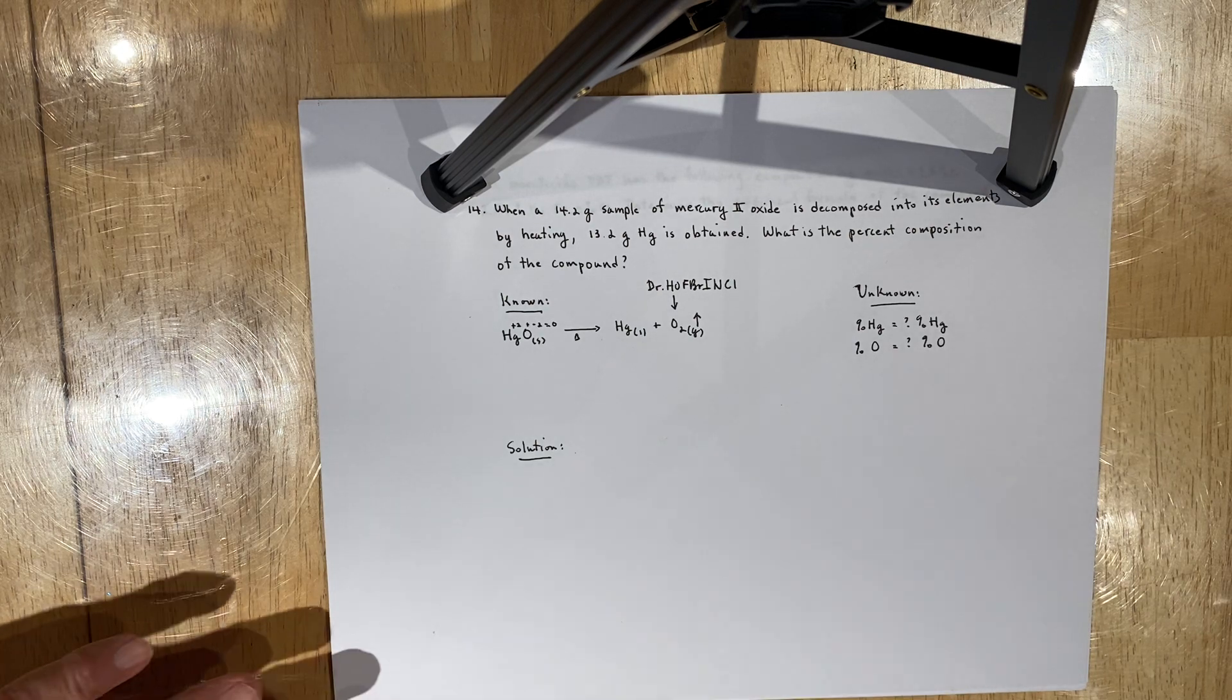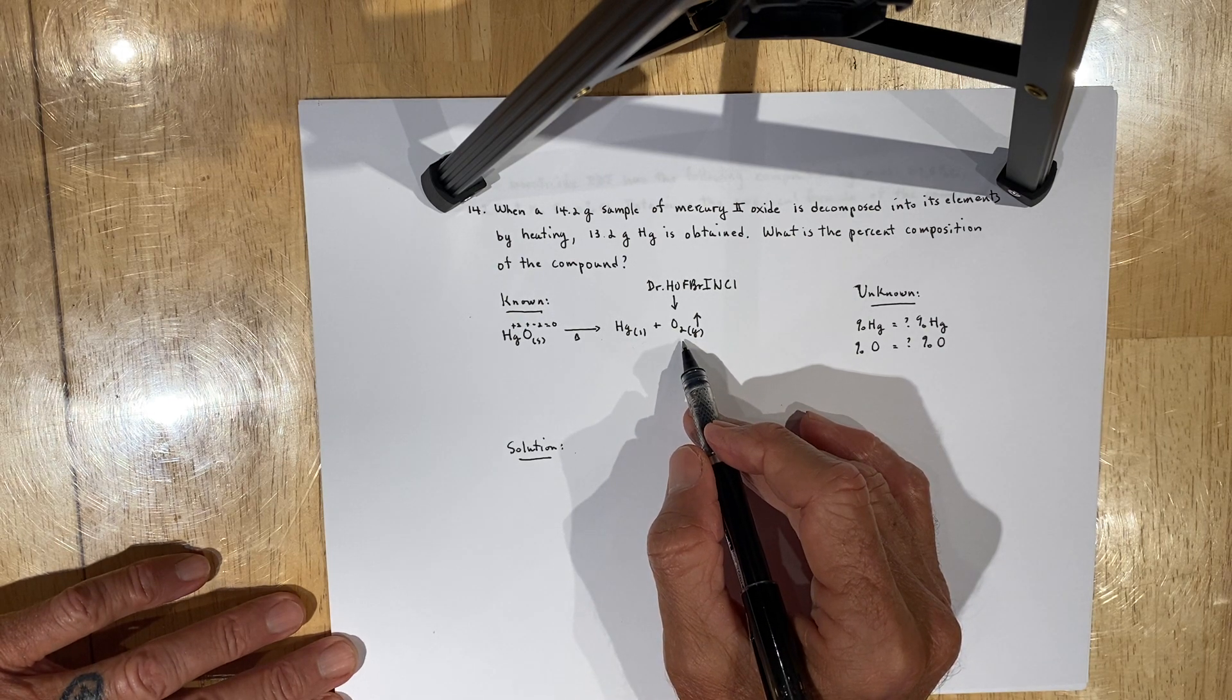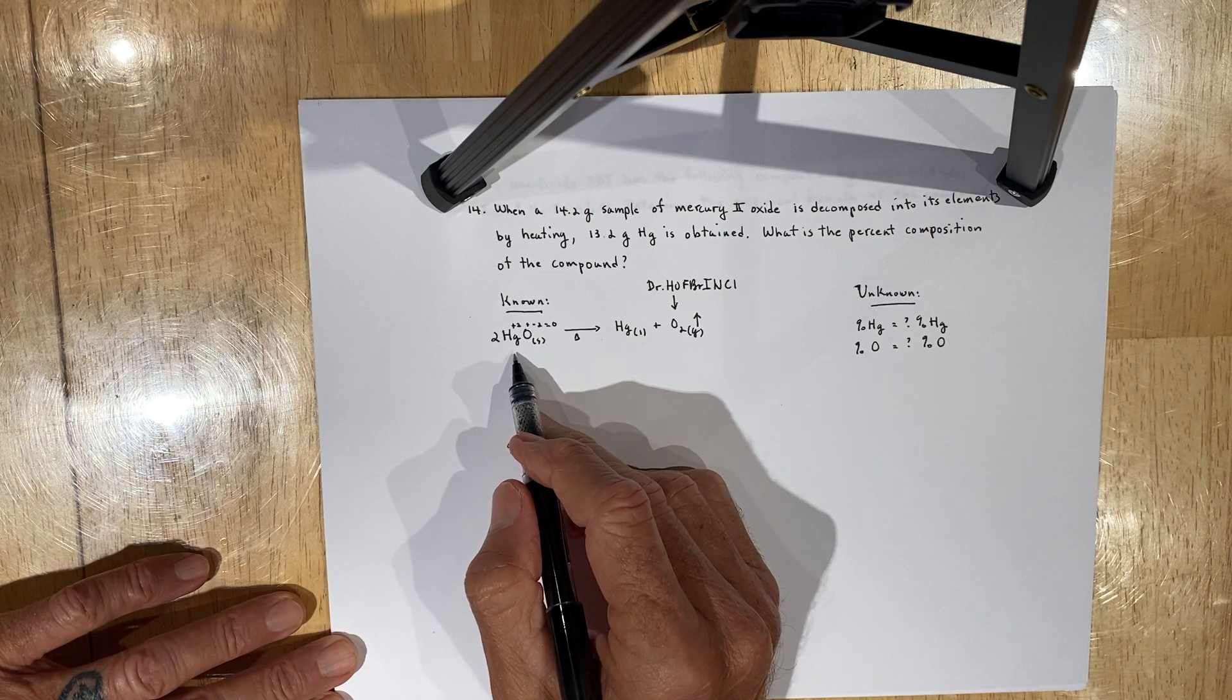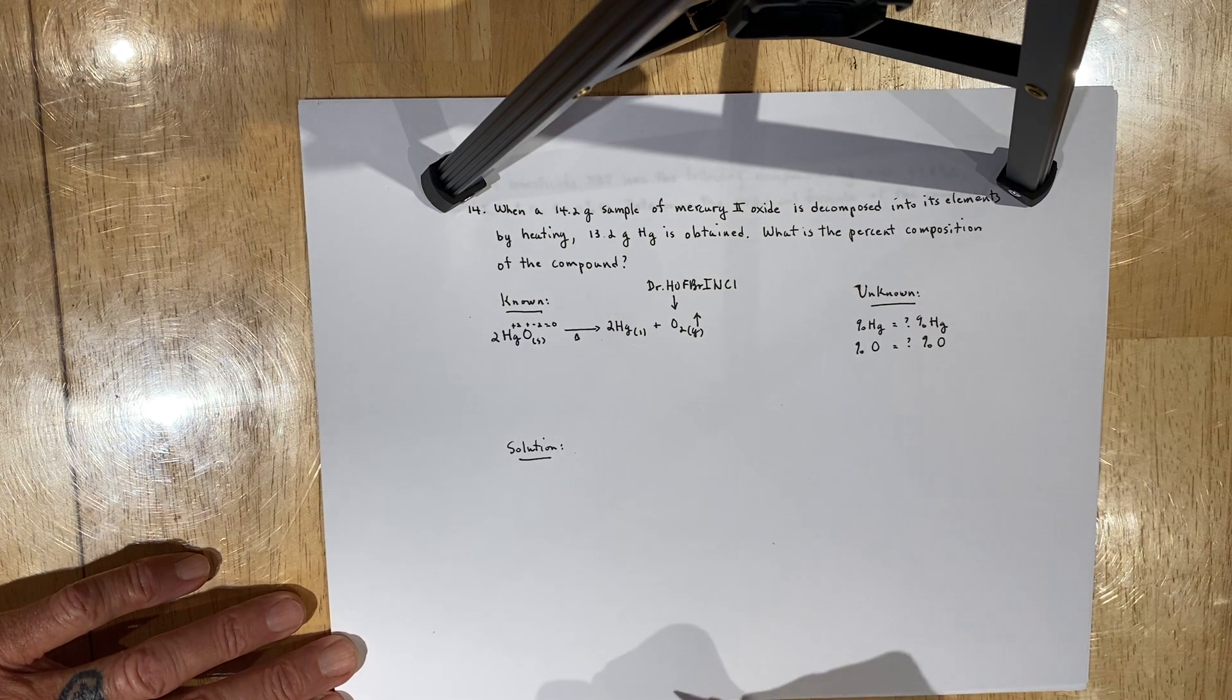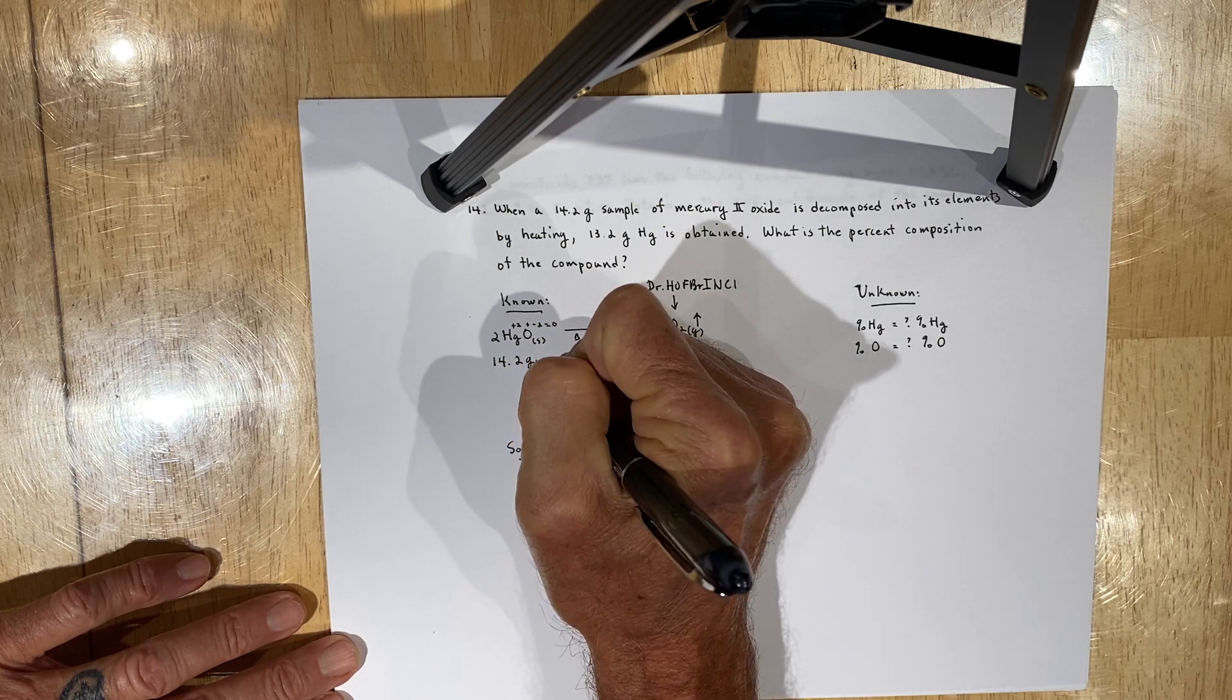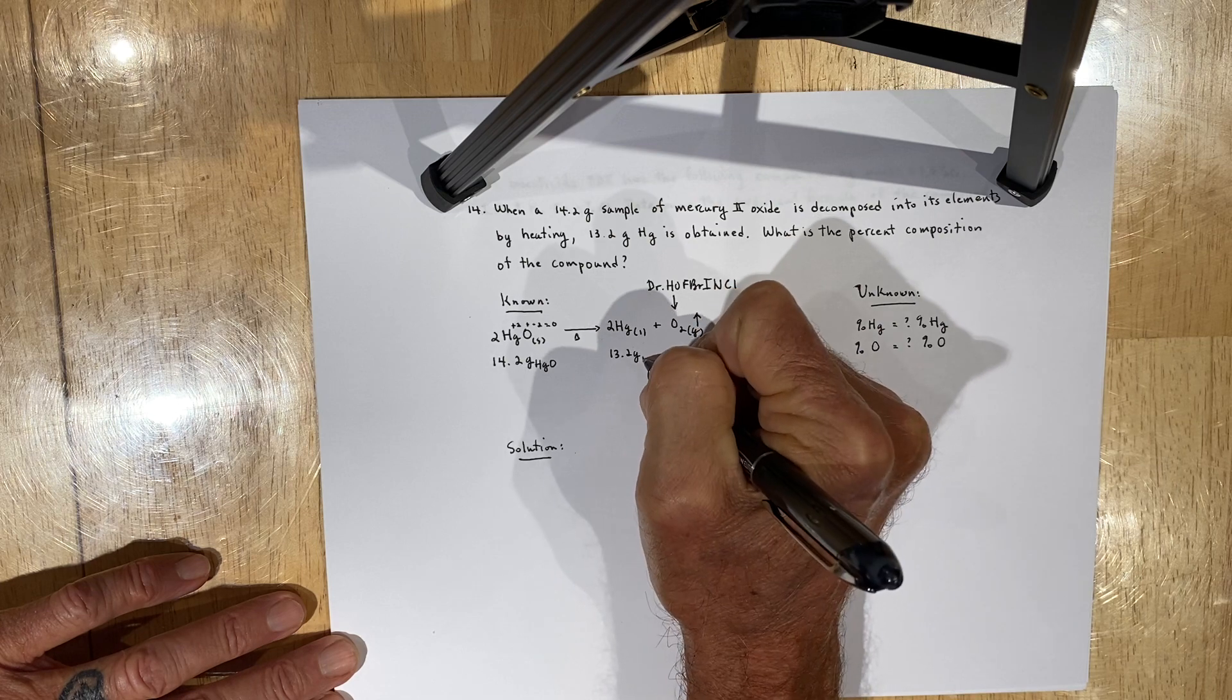That being said, the next thing you need to do is to balance this reaction. Since you have two atoms of oxygen on the product side, you need two atoms of oxygen on the reactant side. Thus, you have two atoms of oxygen, but now you also have two atoms of mercury, so you need to put a coefficient of 2 on the product side in front of mercury. You're told initially that there are 14.2 grams of mercury oxide, which produces 13.2 grams of mercury.